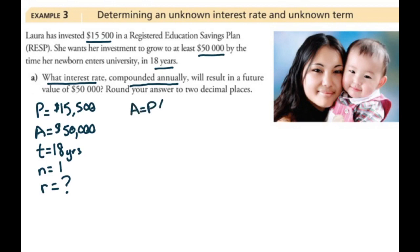We're still using the same formula. But now we're looking for r instead of looking for A or P. So substituting in, A is $50,000. P is $15,500. r we don't know. n is 1. And the exponent is 1 times 18.